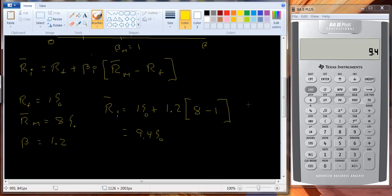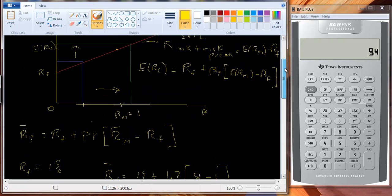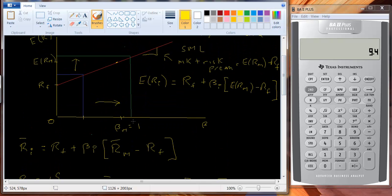So if I went back to the graph I had, if this happens to be 1.2, then this expected return here would be 9.4. This beta would be 1, and the expected return of the market would be 8%. The risk-free rate here would be 1%. Probably not drawn to scale, but you get the idea.